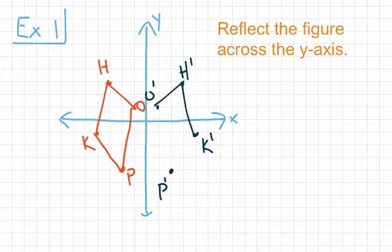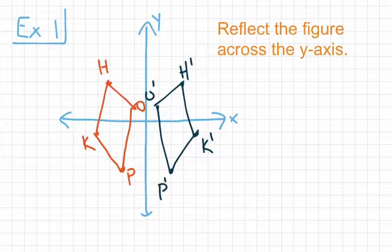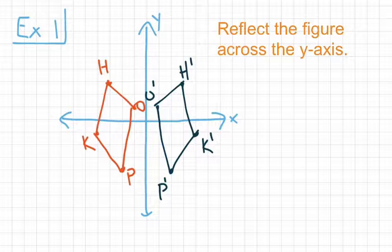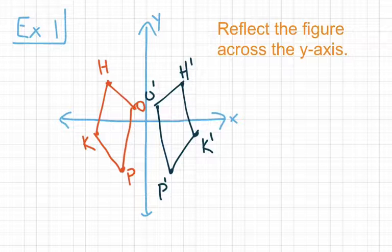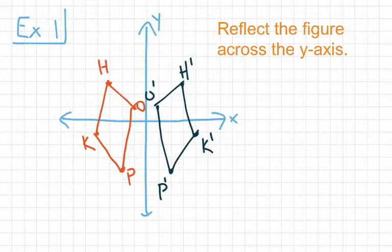Now we go ahead and draw lines connecting our four points. We see that HOPK is a mirror image of H'O'P'K'. They're the exact same shape and the exact same size, but they do not have the same orientation — they're flipped over the y-axis. Same size, same shape, different orientation. We can see how our image is a mirror of our pre-image.